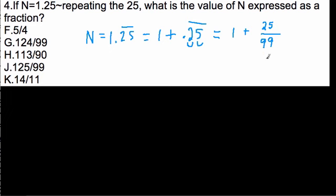We'll talk a little bit about why this works in a moment. Now, if we add these two, 1, you can think of that as 99 over 99. And you have 99 plus 25, which is 124 over 99. So here the answer is G.